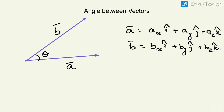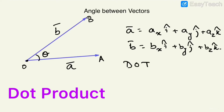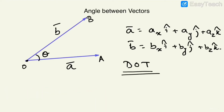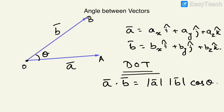We can translate and bring them into common tail configuration at a common tail at O, but how do we find the angle theta? For that, we have to take into account something we've already learned — the dot product. So let us do the dot product. The definition of dot product is: modulus of A times modulus of B times cosine of the angle between them.